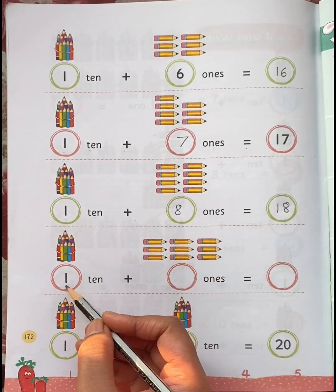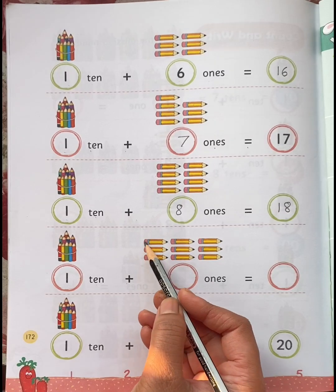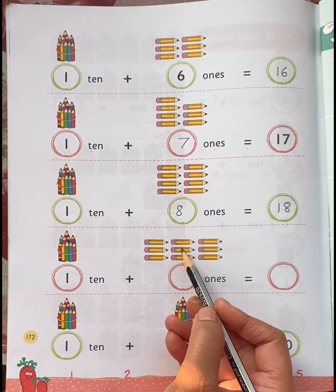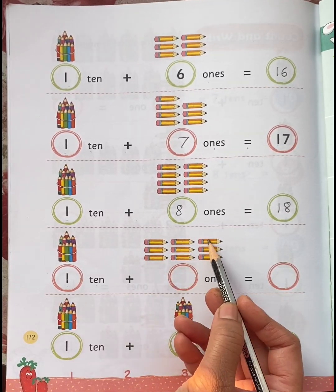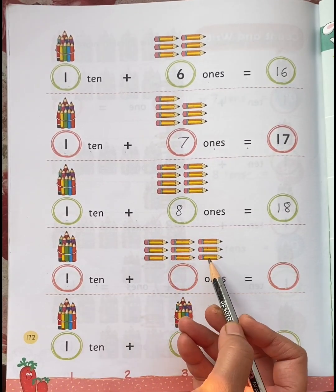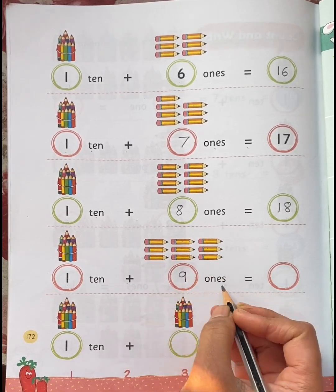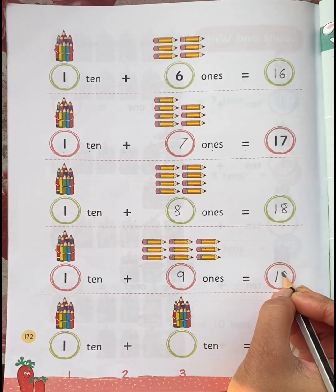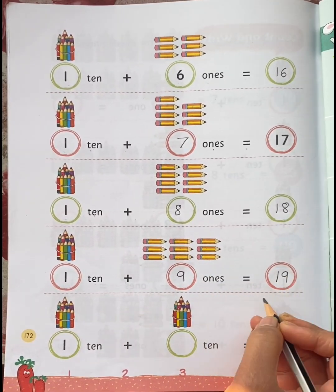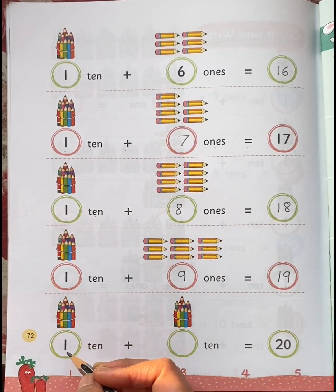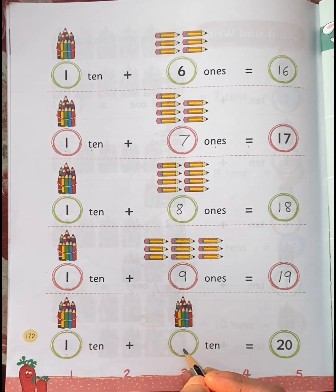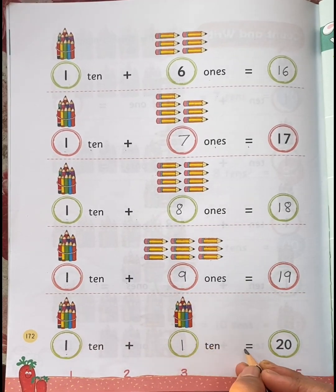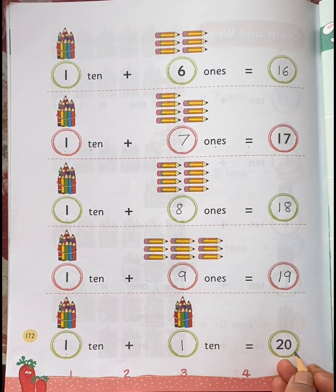One ten plus nine ones is equal to nineteen. One ten plus one ten is equal to twenty.